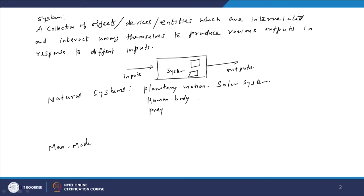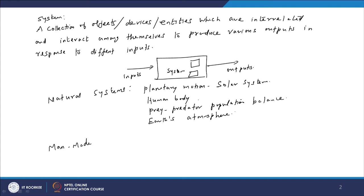Similarly, the prey-predator population balance — nature is balancing the prey-predator population by the food chain in the natural system. And you can say the earth's atmosphere is a huge natural system which controls the seasons and climates, etc.